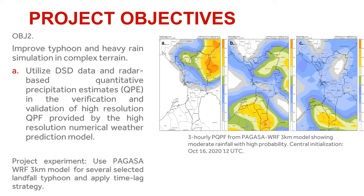The second objective of the project is to improve typhoon and heavy rain simulation in complex terrain. A time lag strategy will be implemented in PAGASA's operational WARF 3 km model, and we will utilize the drop size distribution data and radar-based QPE to validate its performance. The time lag technique takes into account uncertainties in weather forecasting, and it provides much more reliable information compared to a deterministic QPF.